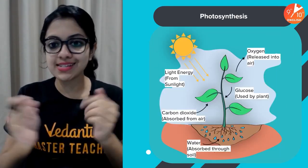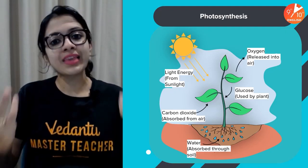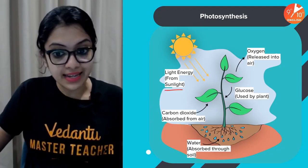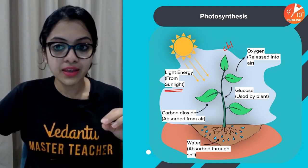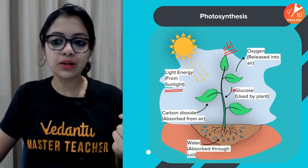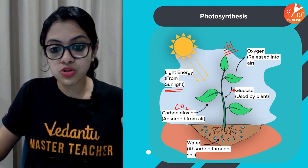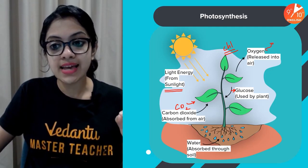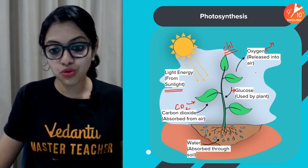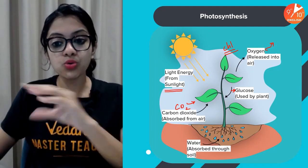Coming to photosynthesis — this is the process by which green plants and some bacteria are able to synthesize organic molecules from simple inorganic raw materials such as carbon dioxide and water in the presence of sunlight, using chlorophyll, which is a magical green pigment, to produce organic molecules such as glucose. CO₂ is taken in and oxygen is given out. The end products of photosynthesis would be glucose and oxygen.